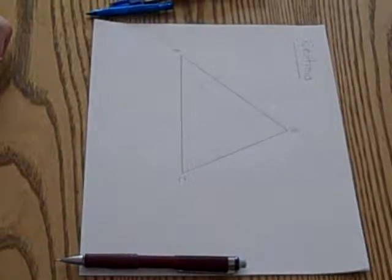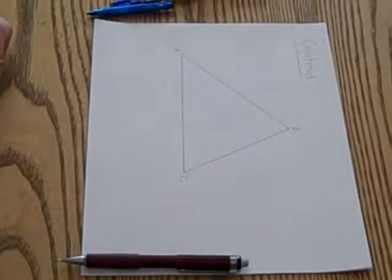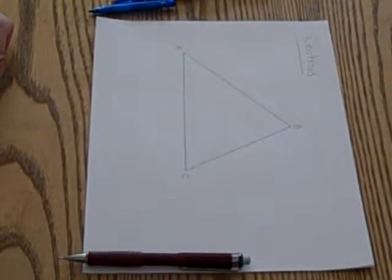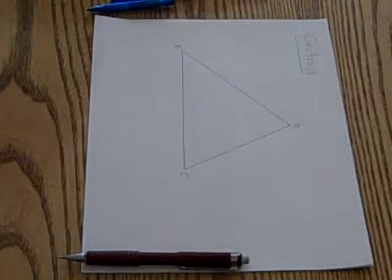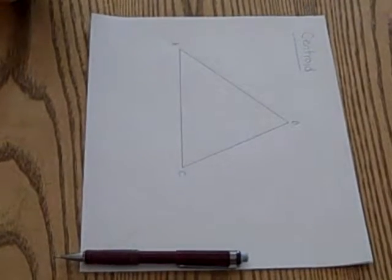Today we're going to construct the point of concurrency known as the centroid. The centroid is the point of concurrency of the three medians of a triangle. So let's remember how we find and construct the medians in a triangle.